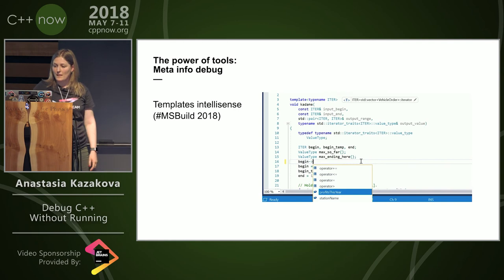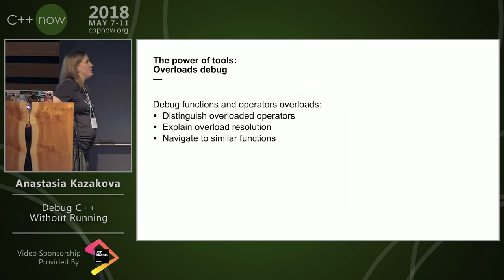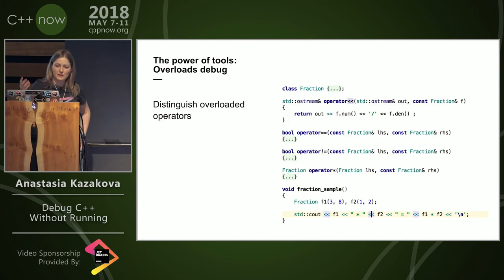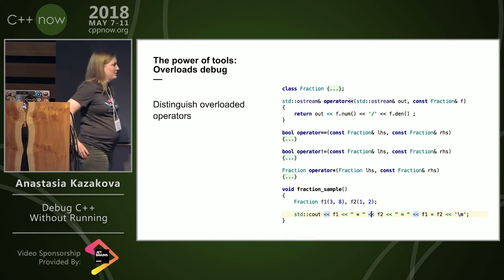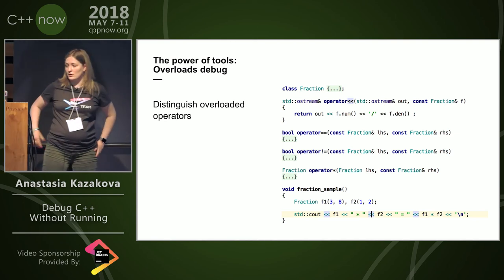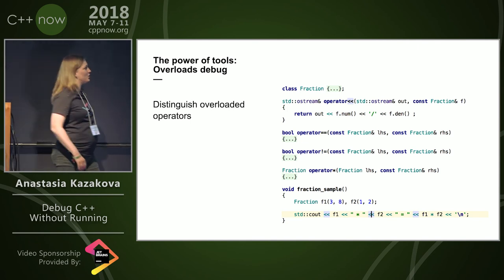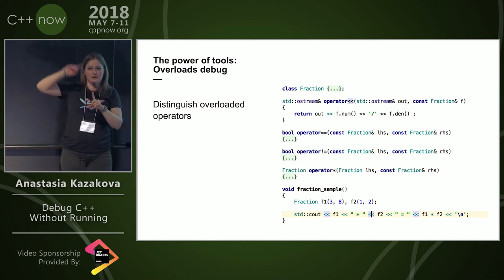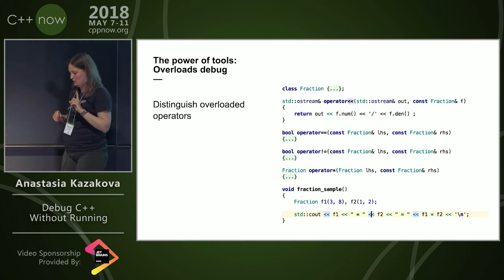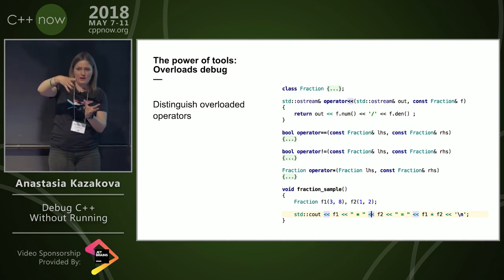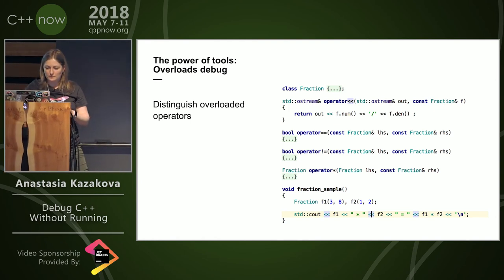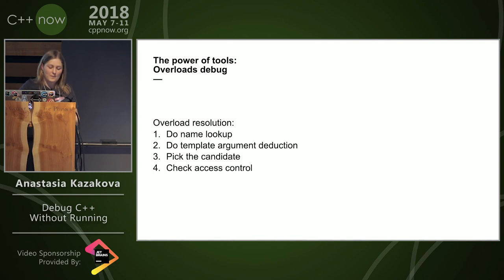Now let's talk about overload debugging — operators and functions. For operators, there are nice features in current tools: when you put the cursor on an operator, the tooling highlights the overloaded operator. CLion can also do 'find usages' for the operator — put your cursor on it and call 'find usages' to see where that particular operator is used, helping you get some understanding of whether it's your overload or something else.